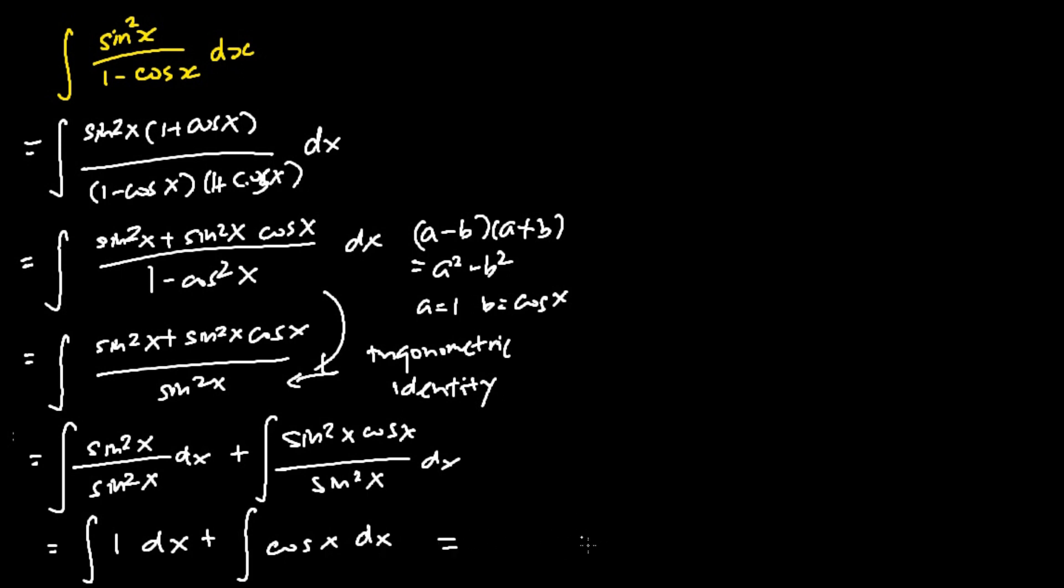I now evaluate the integral. The integral of 1 dx is x. The integral of cosine x is sine x. And here is the final answer to the integration of sine squared x over 1 minus cosine x dx is x plus sine x plus c.